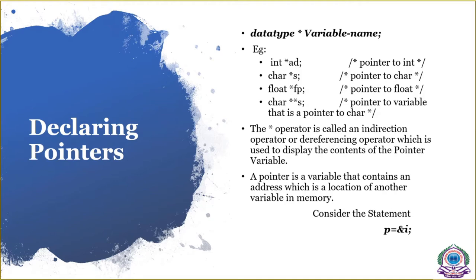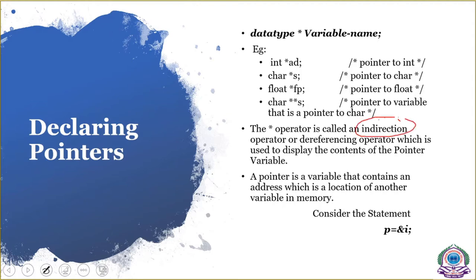Declaring a pointer — how to declare a pointer? By using an operator called star, which is called the pointer operator. The syntax is: data type, star, variable name. Star tells the compiler that it is a pointer type of variable. For example: int *ad — pointer to int; char *s — pointer to character; float *fp — pointer to float; char **s — pointer to pointer to character, which means a double pointer. The star operator is also called the indirection operator or pointer operator.